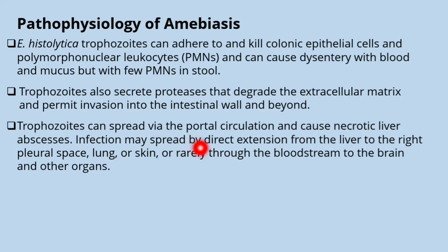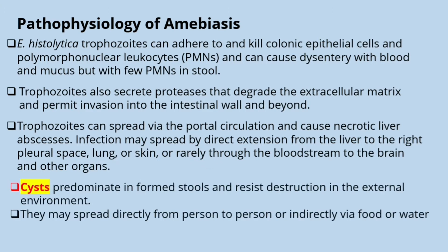Infection may spread by direct extension from the liver to the right pleural space, lung, or skin, or rarely through the bloodstream to the brain and other organs. The cyst predominates in formed stools and is resistant to destruction by the external environment. Cysts may spread directly from person to person or indirectly via food or water — this route is called the fecal-oral route. Importantly, the cysts are the infective form.